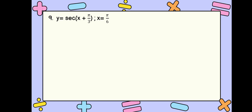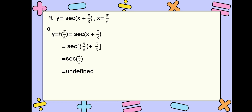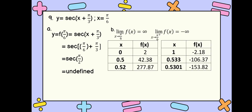Number 9: we are going to check if y equals secant of x plus pi over 3 is continuous at x equals pi over 6. Let us first evaluate our function. f of pi over 6 equals secant of pi over 6 plus pi over 3. Pi over 6 plus pi over 3 equals pi over 2. The secant of pi over 2 is undefined. Since our function does not have a value, it is discontinuous at x equals pi over 6. Using one-sided limits, since both limits go to infinity, we can conclude that our discontinuity is infinite discontinuity.